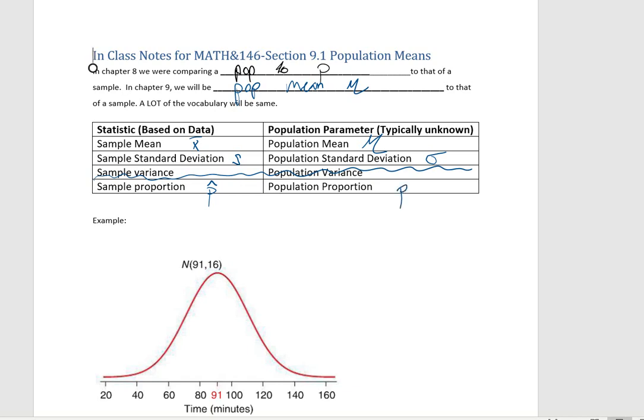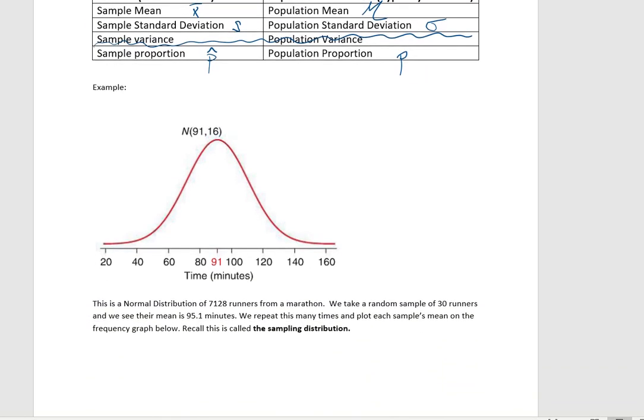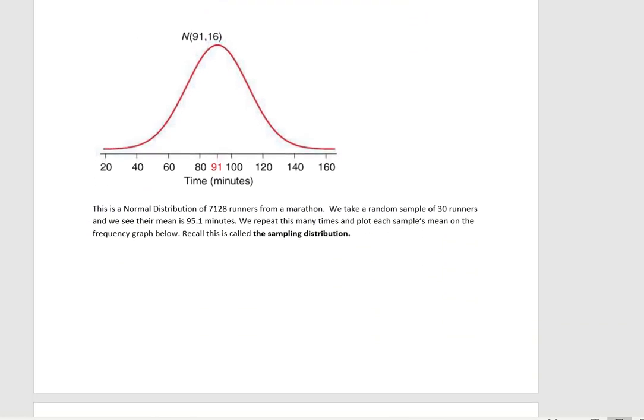So, for example, in chapter 9 what we're going to be doing is we're going to be looking at averages of a population and seeing how well our sample does of trying to estimate that average. In this example, we have a normal distribution of 7,128 runners from a marathon. So that is going to be our population. This and this are our populations.